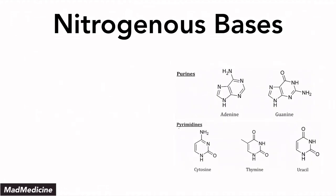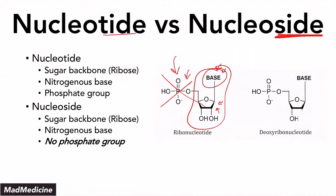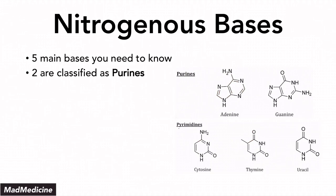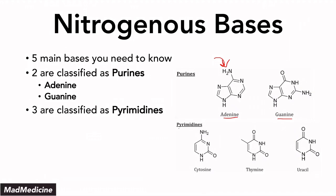The nitrogenous bases determine what kind of nucleotide you have and what type of bonding it will have. There are five main bases you need to know. Two are classified as purines: adenine and guanine. Then there are three nitrogenous bases called pyrimidines: cytosine, thymine, and for RNA, uracil as well. These are the five main nitrogenous bases used in our genetic code, constantly coding for different proteins and mechanisms in our body.